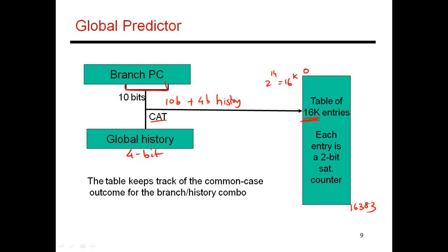And there are all kinds of different ways for me to combine the branch PC and the global history. In this case, I chose to concatenate the two. I could have also taken 14 bits of branch PC and XORed it with 14 bits of global history. And XOR is a great way of increasing the information content within a given bit stream. If I concatenate it, I basically have to take 10 plus 4, and that gives me 14 bits of information.